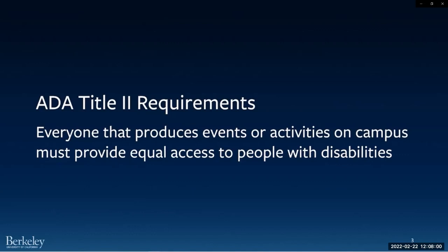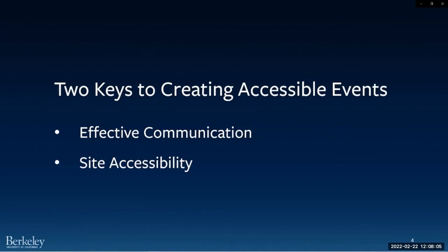There are two keys to creating accessible events. One is providing effective communication; the second is ensuring that the site is accessible. All events involve communication — from advertising and promotions to presentations and speeches. Promotional information is disseminated through websites, email messages, newspapers, periodicals, flyers, and posters. All advertisements at UC Berkeley need to include contact information for a person who can receive accommodation requests — we call this person the access coordinator.